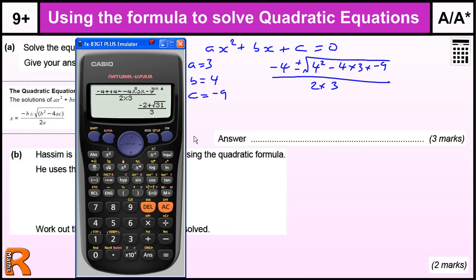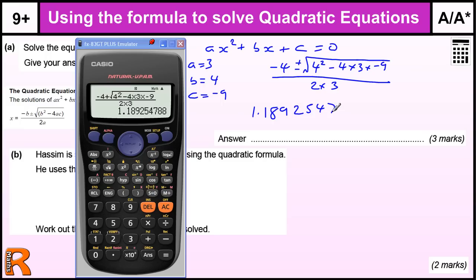That gives us that answer there. We were told to do it two decimal places, so let's go to the SD button. That means that one answer is 1.189254788, so 1.19.